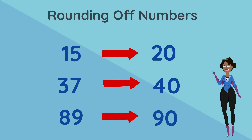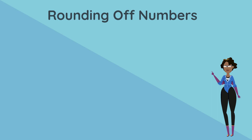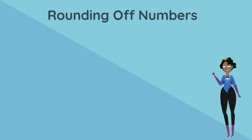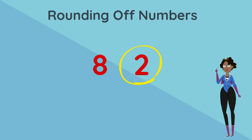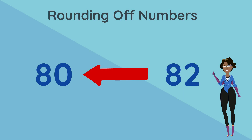So let's go back to Jaleel. If his birthday is in 82 days, in about how many days is his birthday? Let's check the number in the ones position. Since 2 is in our ones column and it's less than 5, we have to round down to 80. Therefore, Jaleel's birthday is in about 80 days.